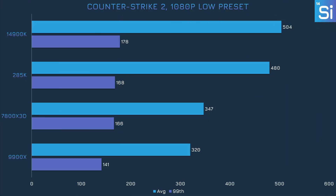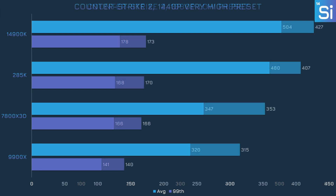Counter-Strike 2 seems pretty favorable to Intel CPUs, so the 7800X3D and the 9900X are behind the Intel flagships by a notable amount. However, the 285K is slightly behind the 14900K. The margins shrink at 1440p, but the performance order remains the same.